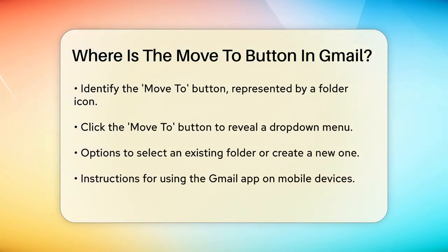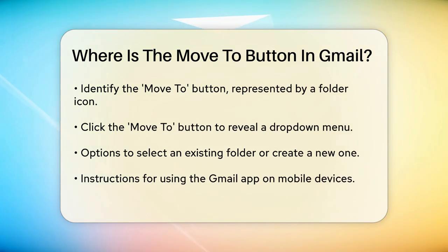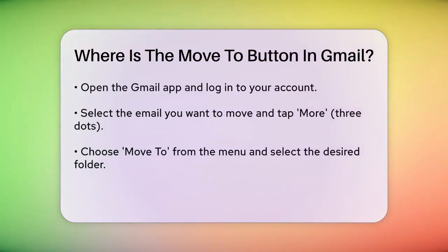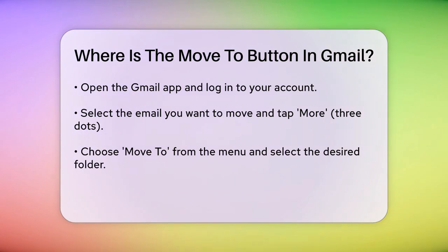If you're using the Gmail app on your mobile device, the steps are slightly different but just as easy. Open the Gmail app, log in to your account, and select the email you want to move. Tap the More option, which is usually represented by three dots in the top right corner. From the menu that appears, select Move To and then choose the folder where you want to move the email. In both cases, the Move To button is easily accessible and helps you keep your inbox organized by moving emails into specific folders or labels.